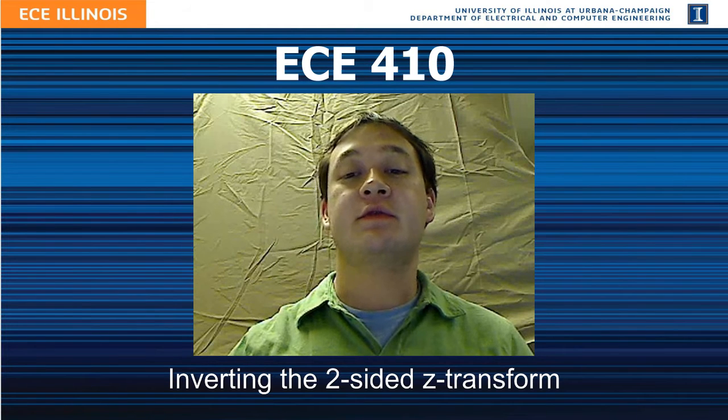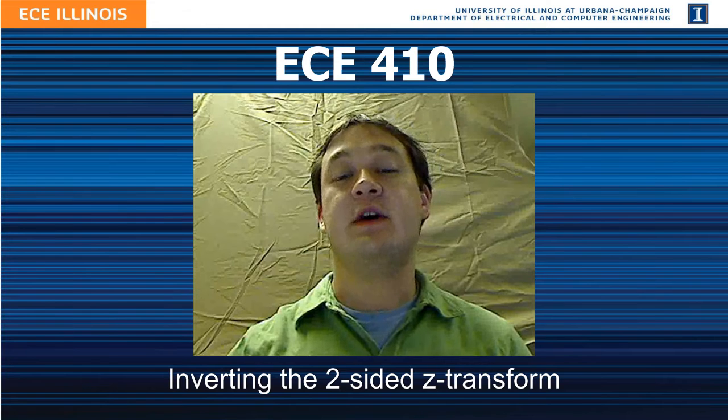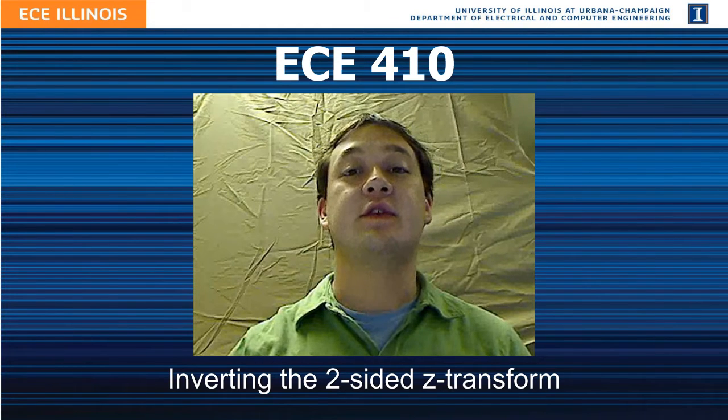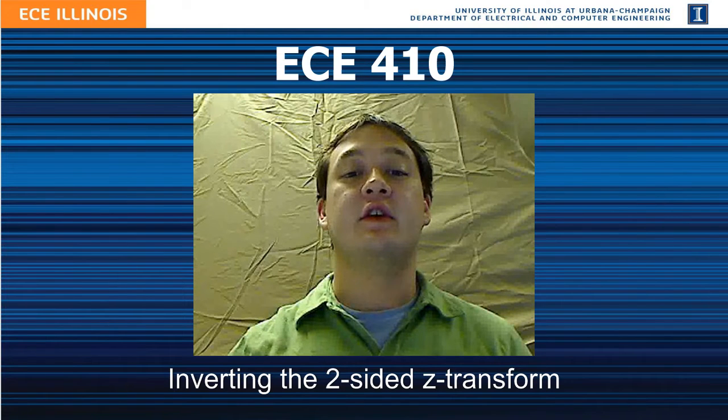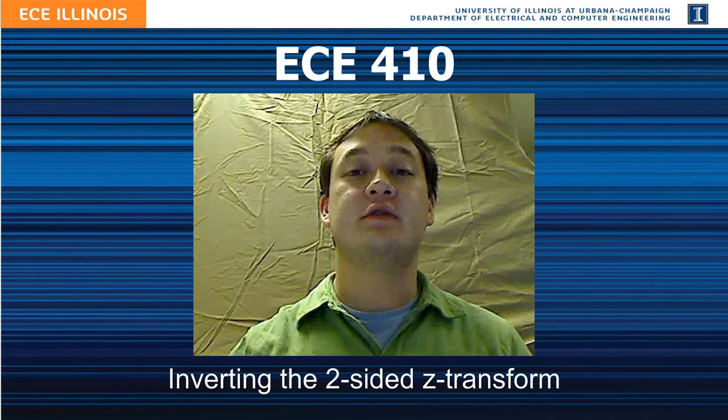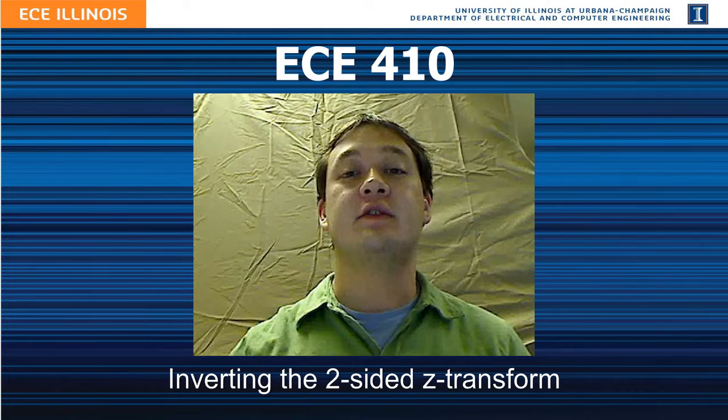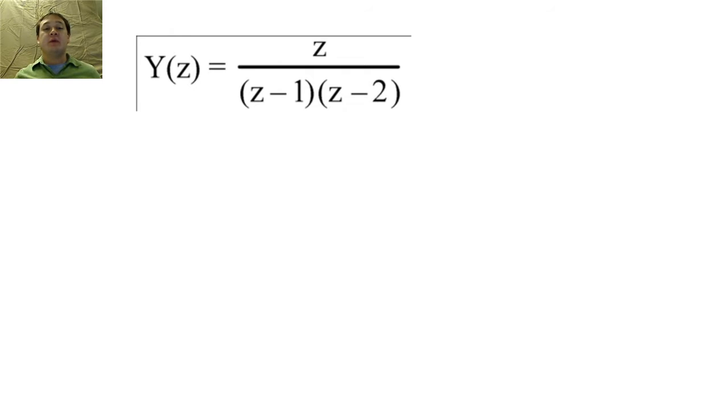So the process for inverting the two-sided Z transform is pretty much the same as the process for inverting the one-sided Z transform, but with one major difference. The ROC is critical to the calculation. I will explain why we need to know the ROC by using an example.